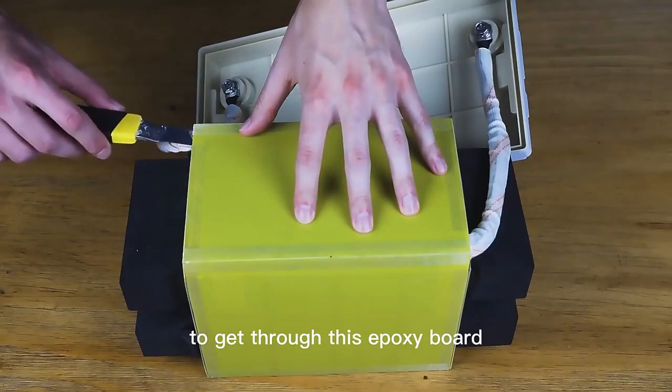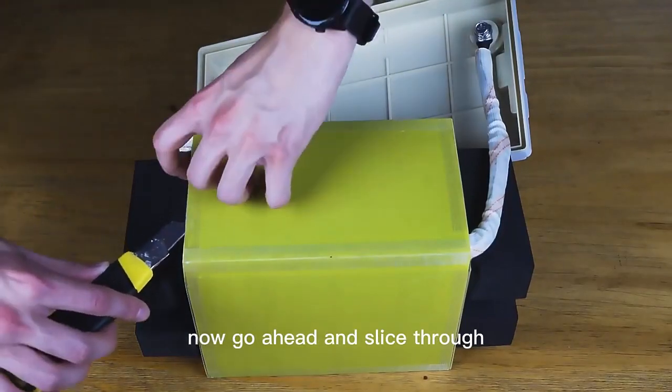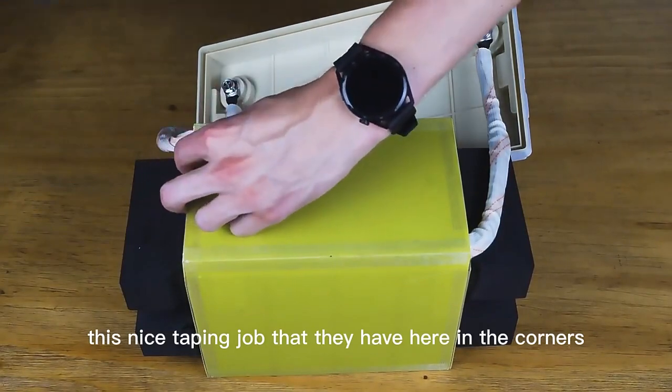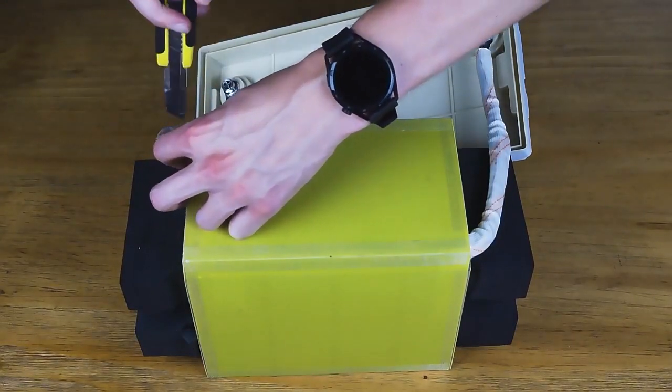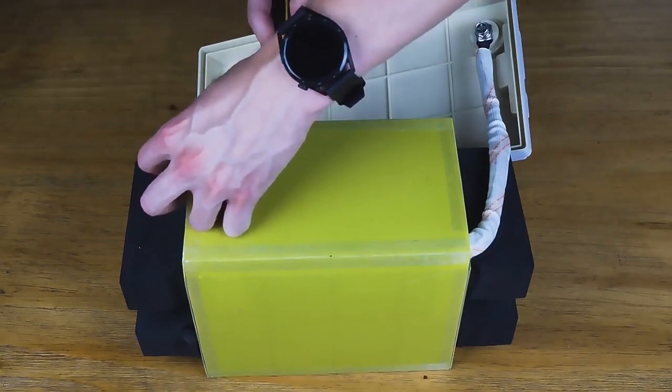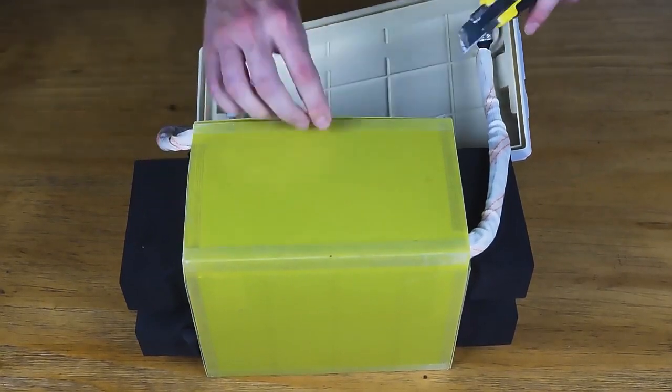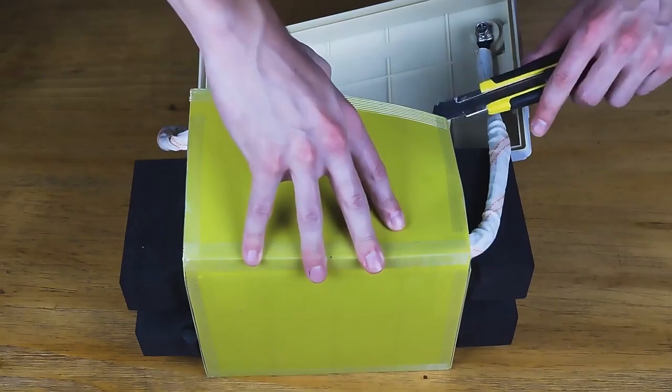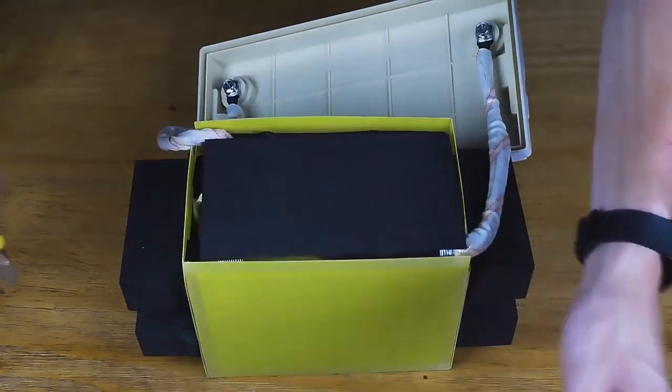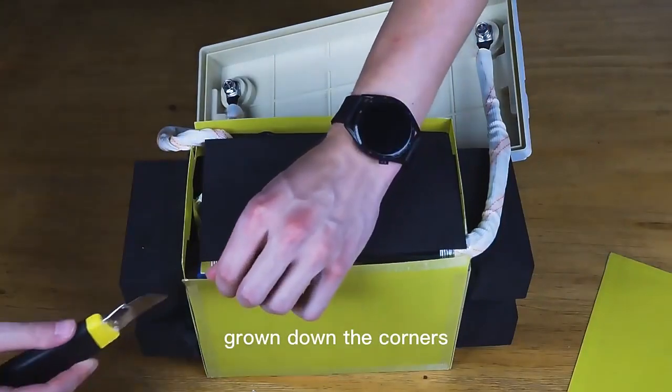To get through this epoxy board now, we're going to slice through this nice taping job that they have here in the corners. Let's see if I can slip this in here. There we go. How elegant. Just cut that off, keep going down the corners.